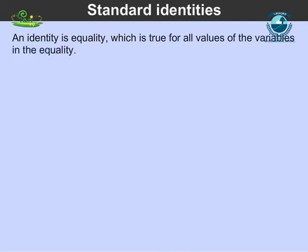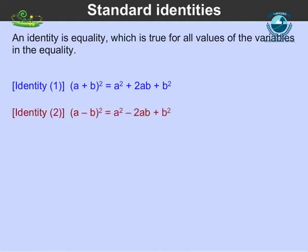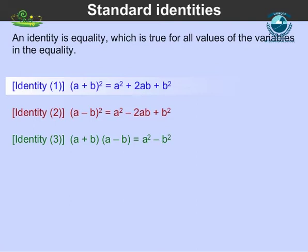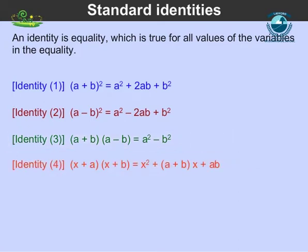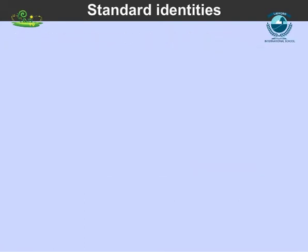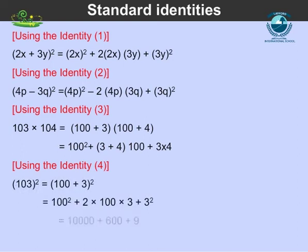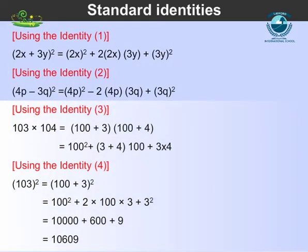An identity is an equality which is true for all values of the variables in it. These identities are very useful in factorization and simplification of algebraic expressions. These are some of the standard identities: (a+b)² = a²+2ab+b², (a-b)² = a²-2ab+b², (a+b)(a-b) = a²-b², and (x+a)(x+b). All four identities are useful in carrying out squares and products of algebraic expressions, and they allow easy alternative methods to calculate products of numbers.